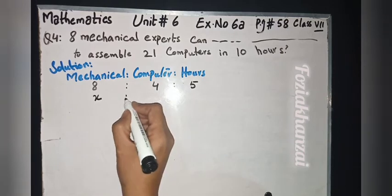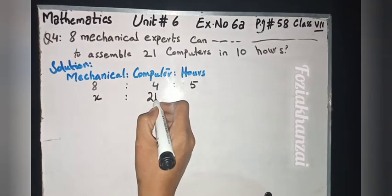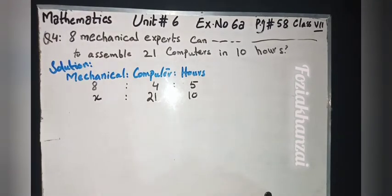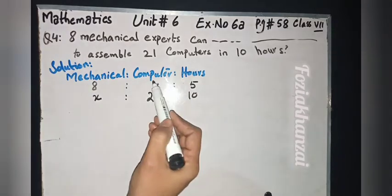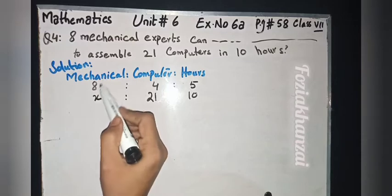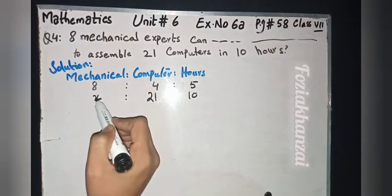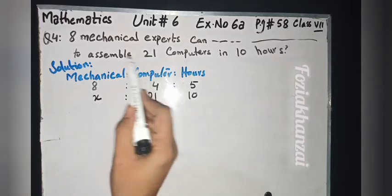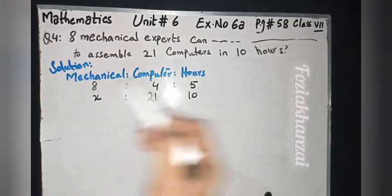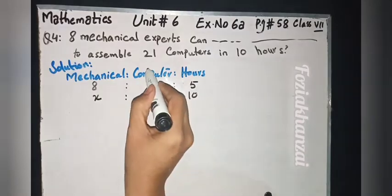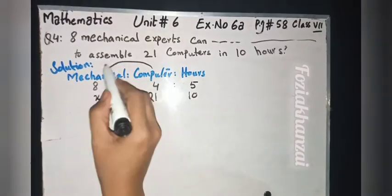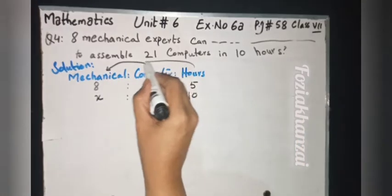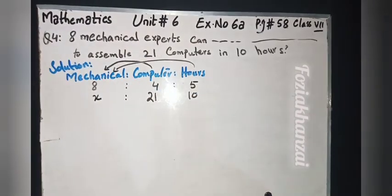We write 21 computers in 10 hours for the second case. Now we compare: first compare computers with mechanical experts, then compare hours with mechanical experts. So we set up the table with computers compared to mechanical experts, and hours compared to mechanical experts.